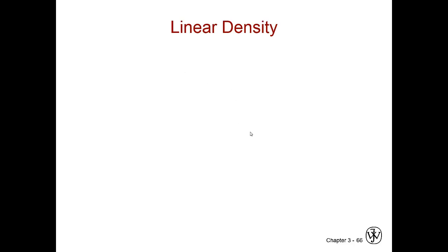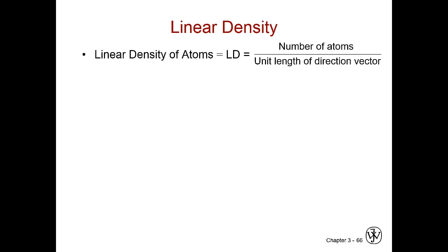Linear density is a fairly simple concept. Density usually means the amount of something within a volume — mass divided by volume. It's similar, but not the same. Here we're looking for the number of atoms that are traversed throughout a unit length of a direction vector.